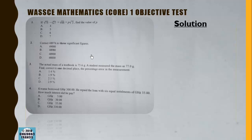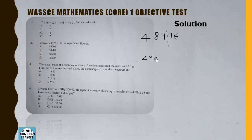Next, we correct 48976 to 3 significant figures. The digits 4, 8, 9 are the first three significant figures. The next digit is 7, which is more than 5, so we add 1 to 9, giving 10 — carry over to 8 to get 9. The result is 49000.